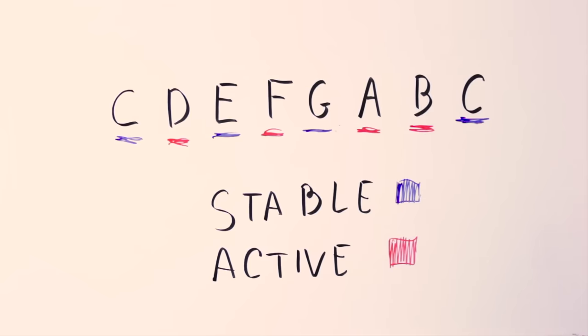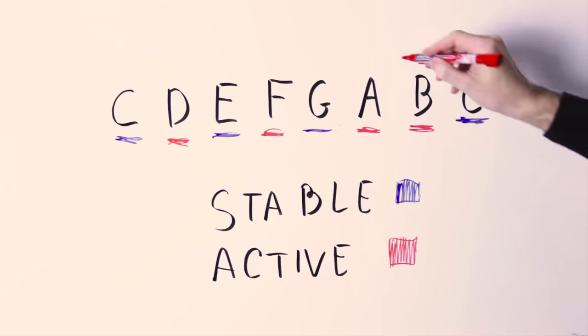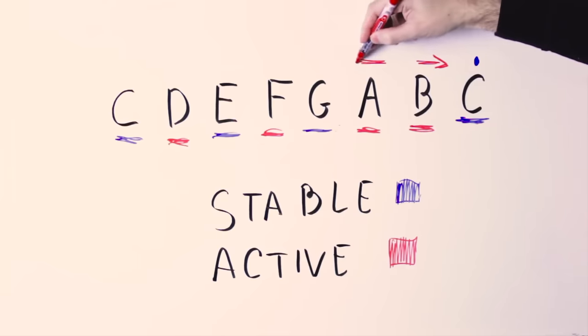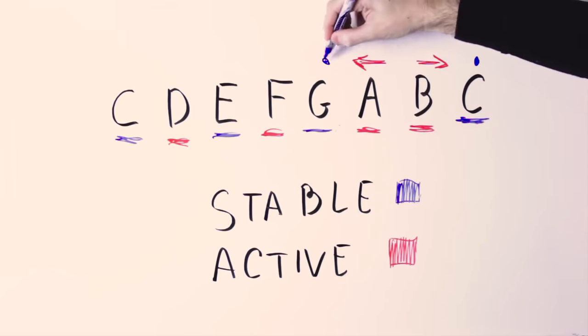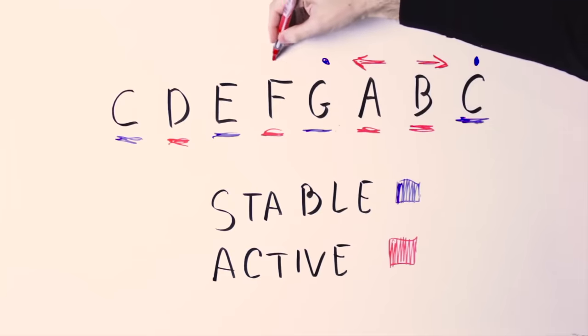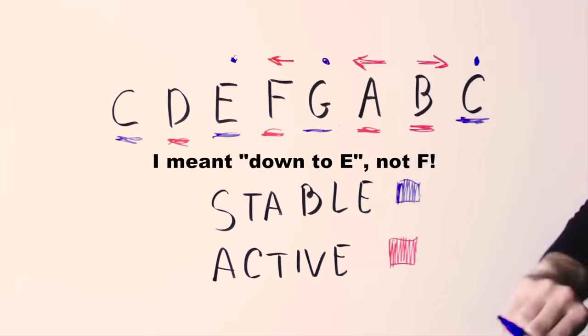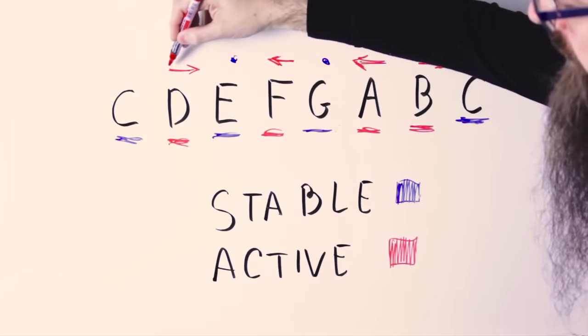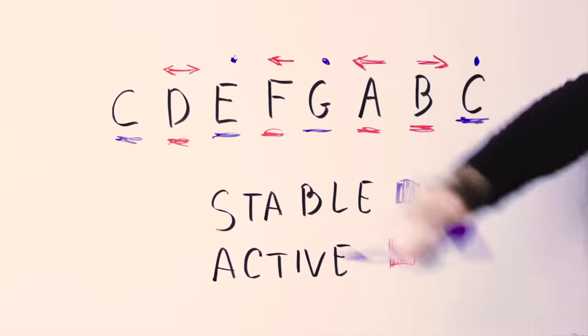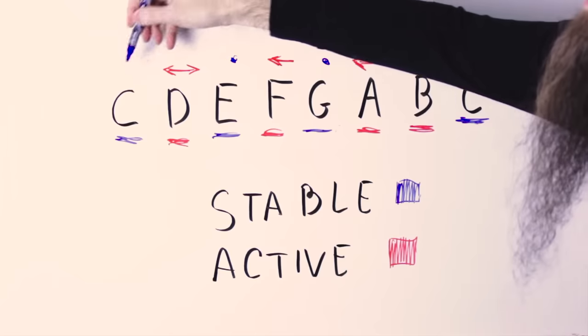Active means that they want to resolve into another note. They want to be followed by another note. For instance, the seventh note, the B, wants to be followed by a C. So it has this upward tendency. The sixth note, the A, wants to resolve down on G. The fourth note, the F, wants to resolve down on E. And finally the second note, the D, wants to resolve but it's pretty much indifferent if you resolve it up to E or down to C.